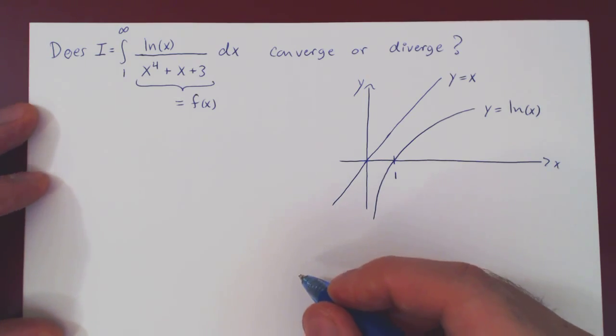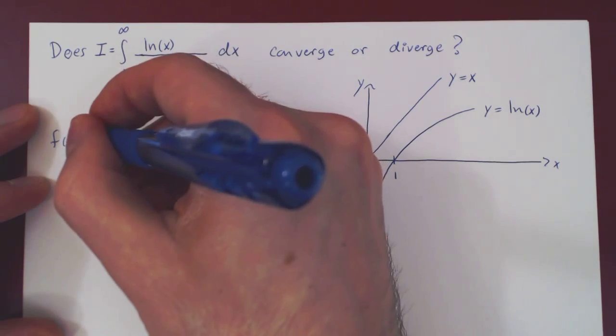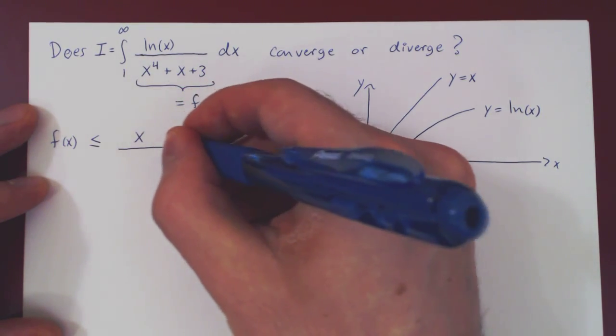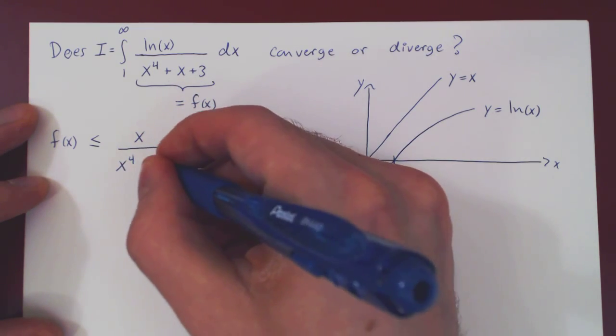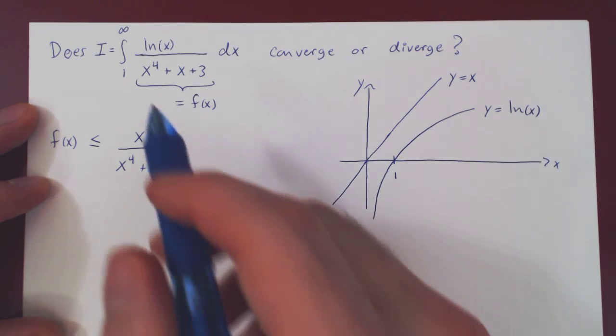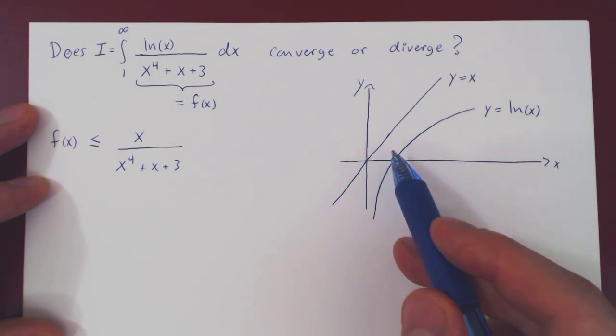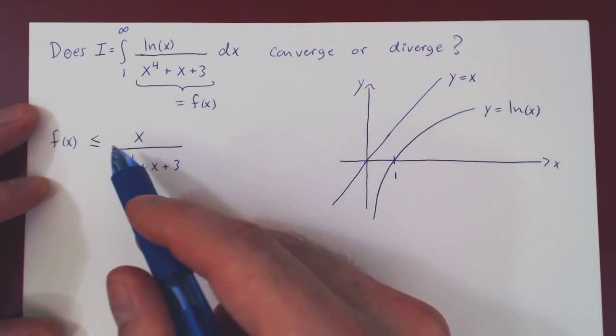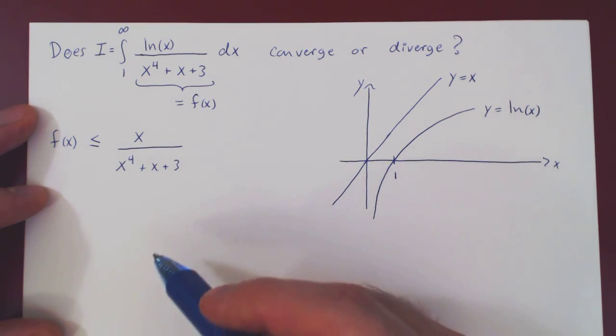And so f of x is at most x over x to the 4 plus x plus 3. If I replace my numerator, which is ln of x, by something bigger, x, the whole fraction becomes bigger than the original fraction. So this should be clear.